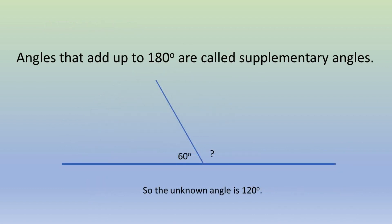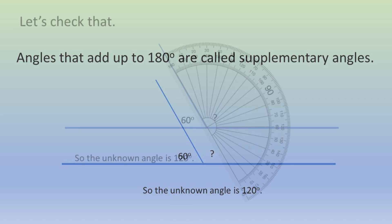Angles that add up to 180 degrees are called supplementary angles. So the unknown angle here is 120 degrees. Let's check that.